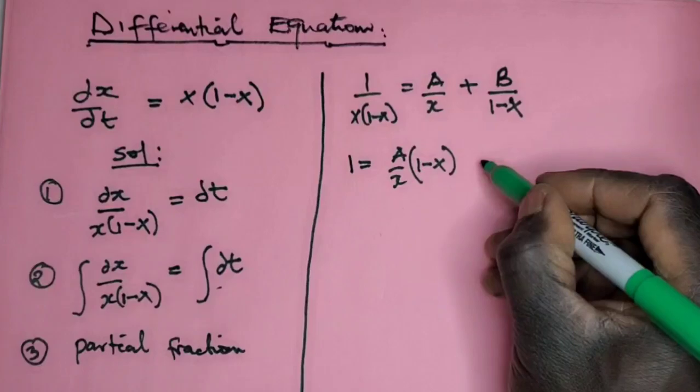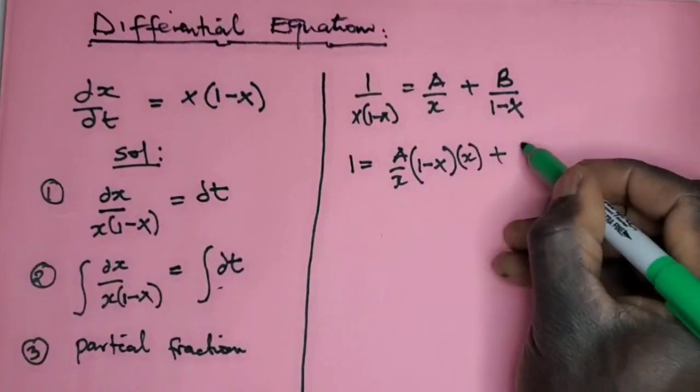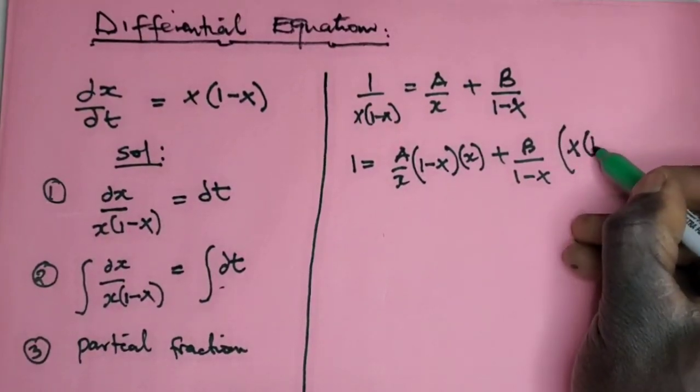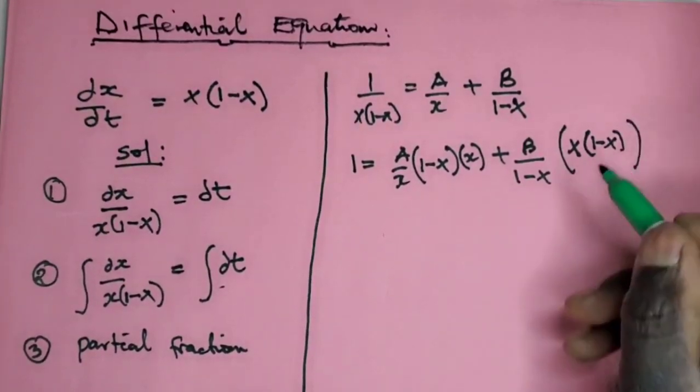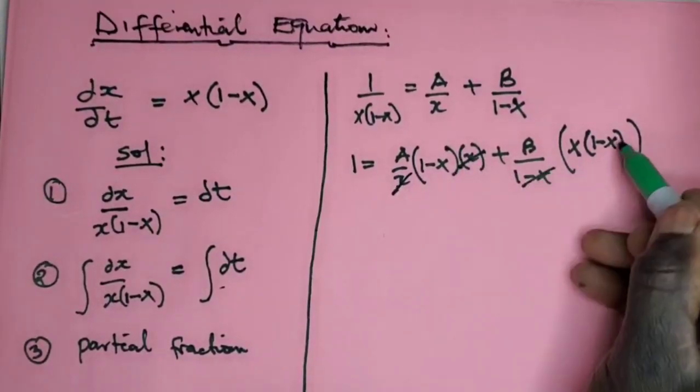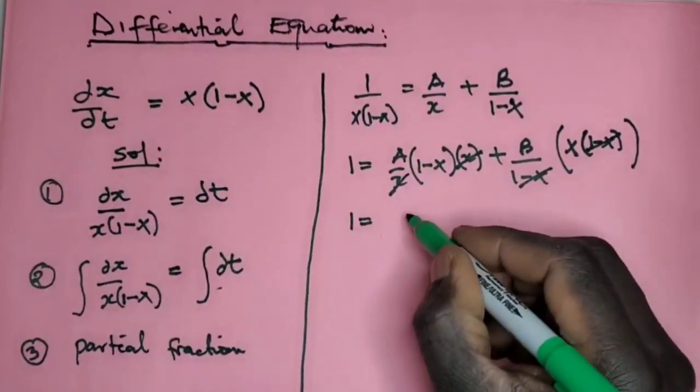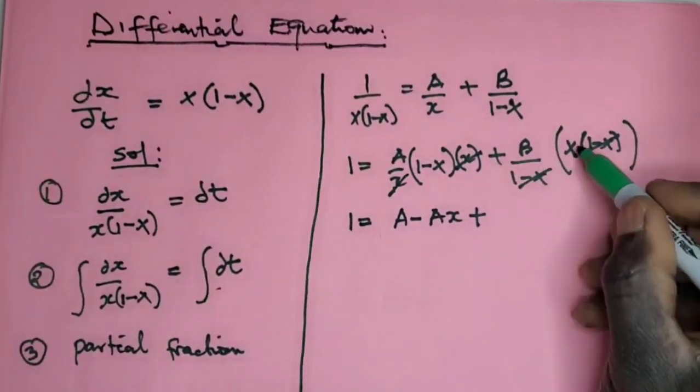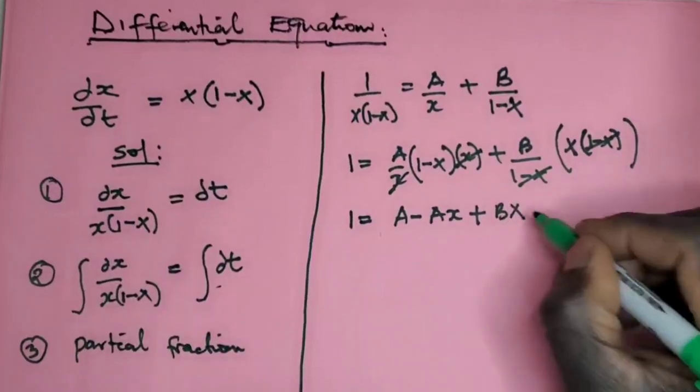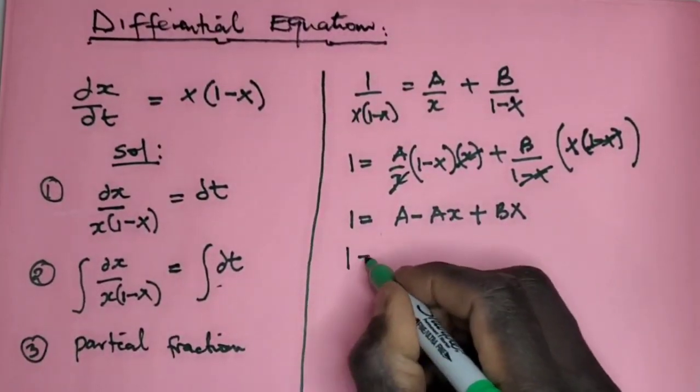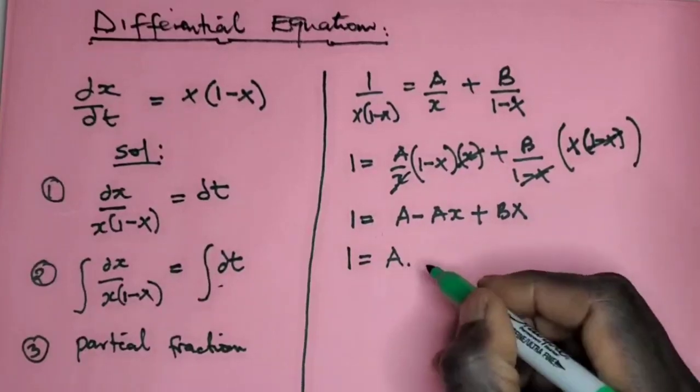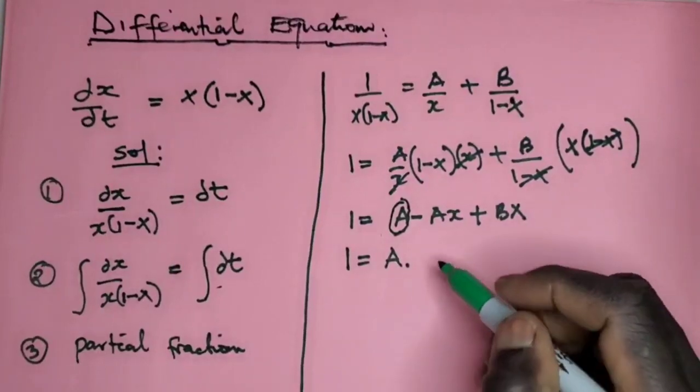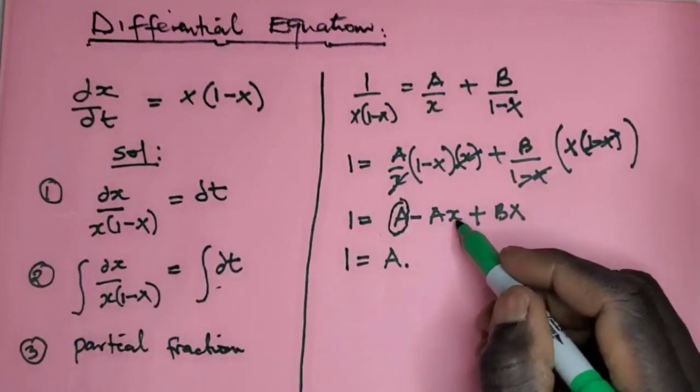So 1 = A(1-x) + Bx. This one cancels that, this one cancels that, so we have 1 = A - Ax + Bx. Now collect the like terms. So A = 1, because this is the constant, so the constant has to be the same with the constant.